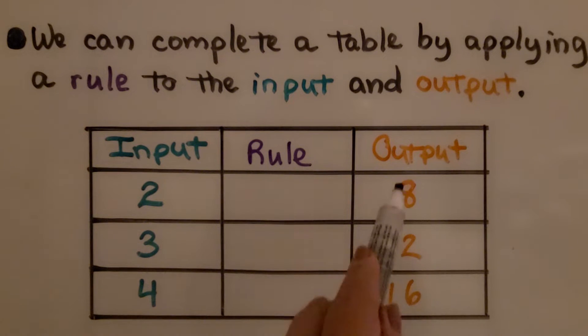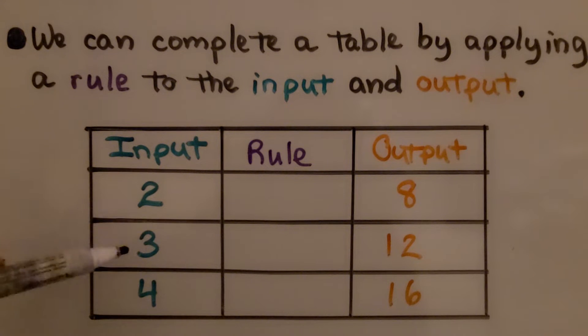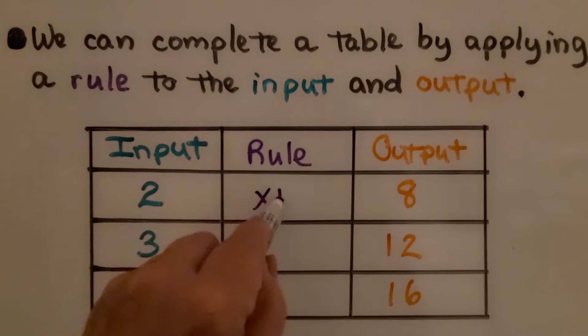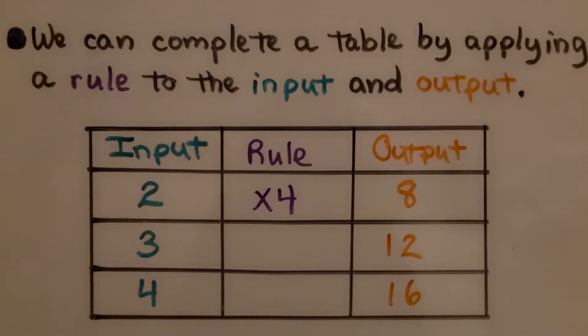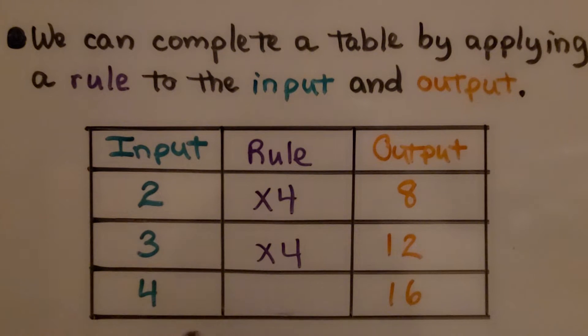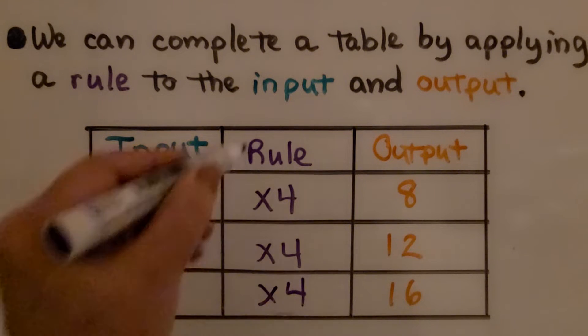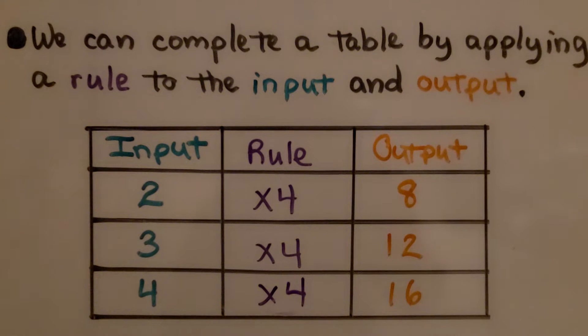And on this side, it's going up by 4. So as it goes up by 1, it goes up by 4. The rule must be times 4. 2 times 4 is 8, 3 times 4 is 12, 4 times 4 is 16. We know the rule is to multiply by 4.